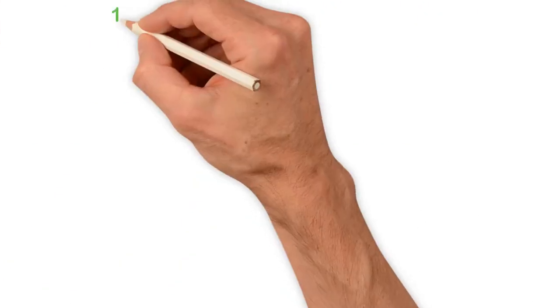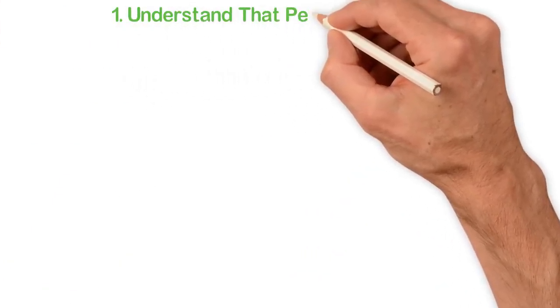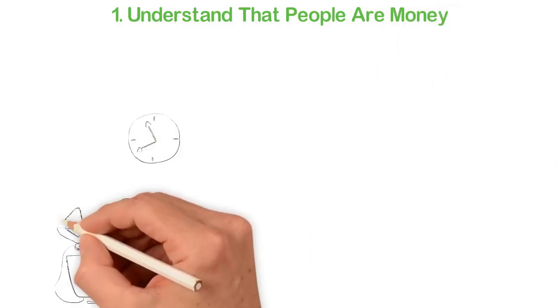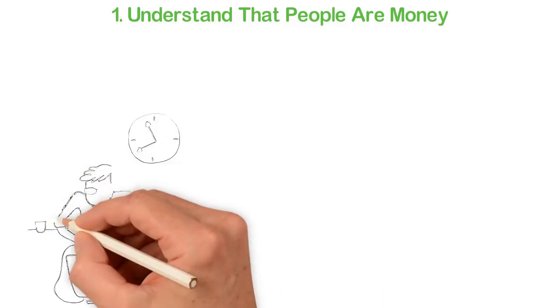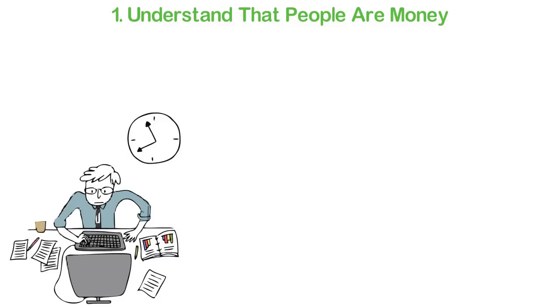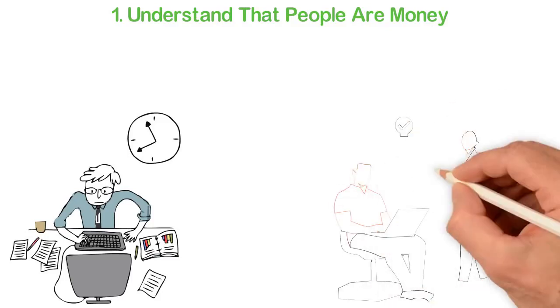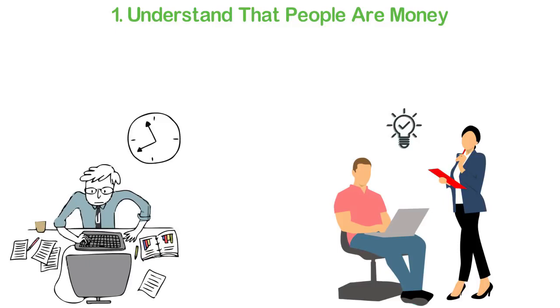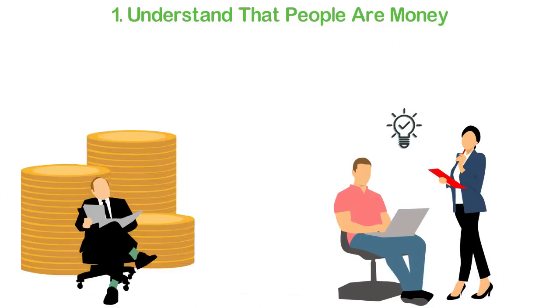Let me leave you with a few tips. Number 1: Understand that people are money. This is the most important point in this video because if you understand that people are money, knowing that there's a room where a billion people live will make you restless. You should not sleep until you figure out how to serve a percentage of the billions of people in this room through the internet.